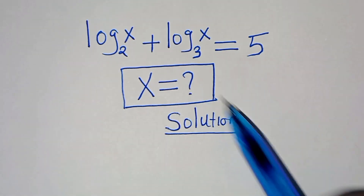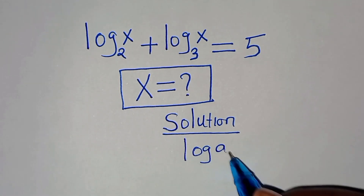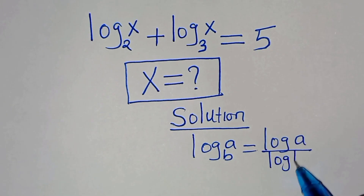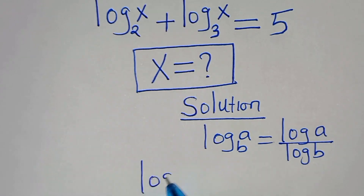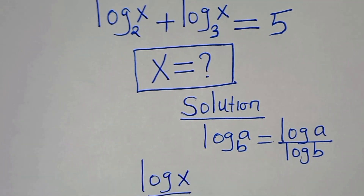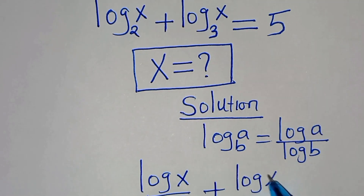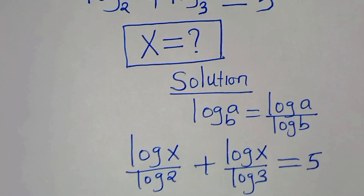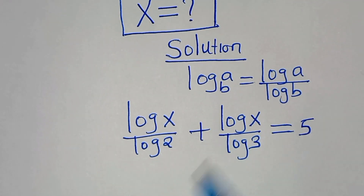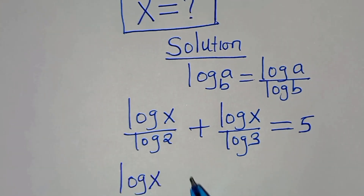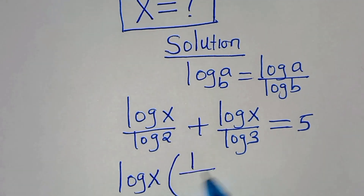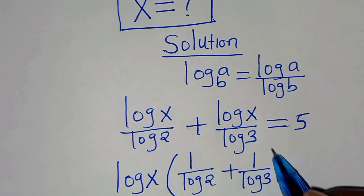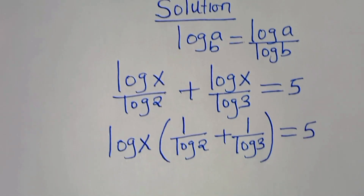We have log base 2 of x and log base 3 of x. These are in the form of log base b of a, which we can express as log a divided by log b. So here we have log x divided by log 2, plus log x divided by log 3, equals 5. Since log x is common, we can factor it out.